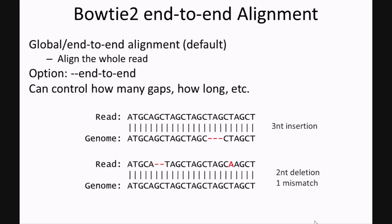The default alignment setting in Bowtie 2 is end-to-end alignment. This can be thought of as global read alignment, as Bowtie 2 will try to align the whole read to a location of the genome. As we see in these examples, we can have an alignment where the read has a three-nucleotide insertion, or an alignment where there's a two-nucleotide deletion and a mismatch. Depending on how you set your parameters, Bowtie 2 will score each of these alignments and determine which is the best one.